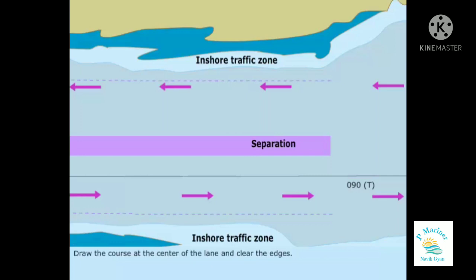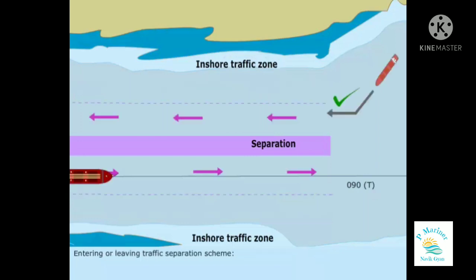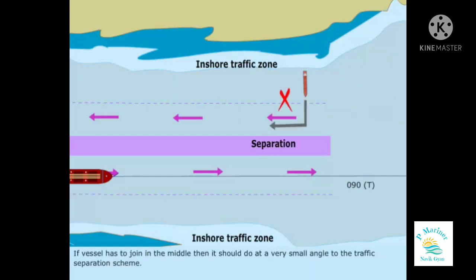Draw the course at the center of the lane and clear of the edges. When entering or leaving the traffic separation scheme, make the course line join the traffic separation scheme at the beginning or at the end. If the vessel has to join in the middle, then it should do so at a very small angle to the traffic separation scheme.